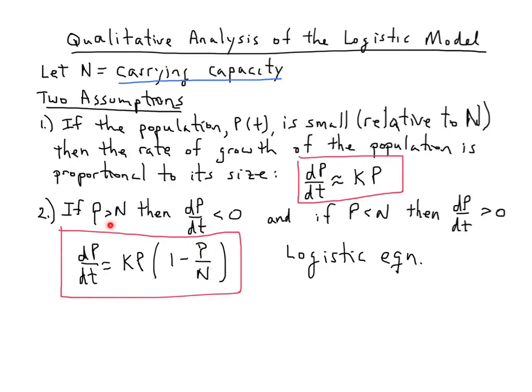If P is ever bigger than N, then this would be a number bigger than 1. 1 minus something bigger than 1 is a negative number. kP is positive. Negative times positive is negative. We see that our rate of growth is negative. So when we're bigger than the carrying capacity, this equation reflects the fact that our rate of growth would be negative.